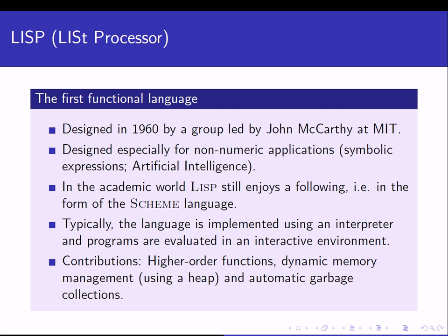Lisp is a language we are quite familiar with from this course. It was the first functional language, and it's interesting that it was designed around the same time as Fortran — in 1960 or 1959 — by a group led by John McCarthy at MIT. It was designed especially for non-numeric applications, like solving symbolic expressions, and was used in artificial intelligence. Lisp has not gained much popularity commercially, but in academia it still has a following — for example, in the form of Scheme, the language used in this course.